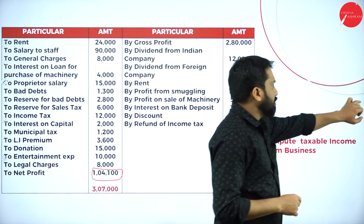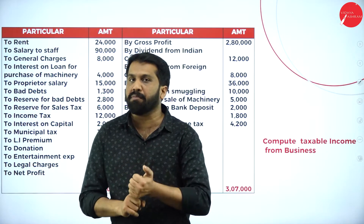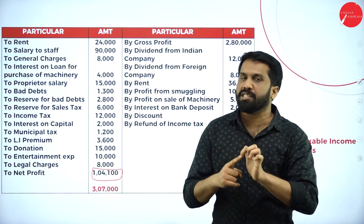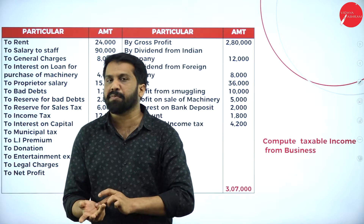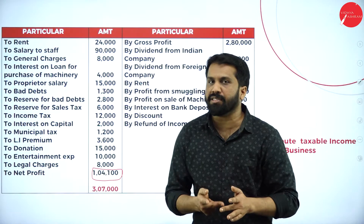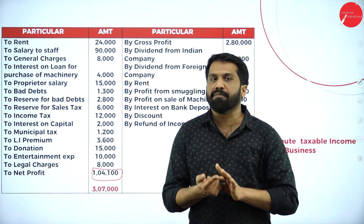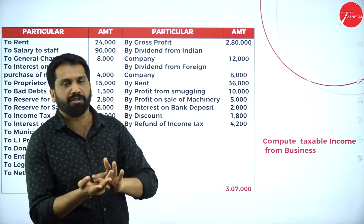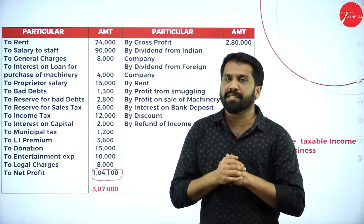Items not related to business include: all reserves, all provisions, income tax, life insurance premium (LIP), depreciation, personal expenses, municipal tax, and any tax paid other than GST — such as luxury tax. These are not part of your business income and must be added back.